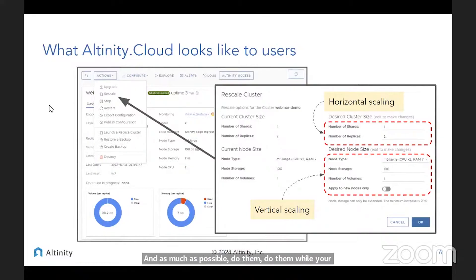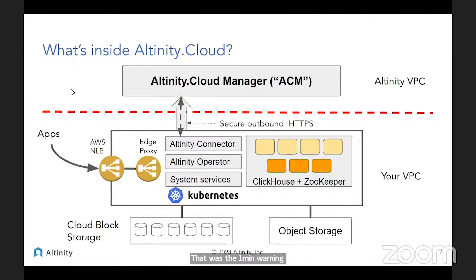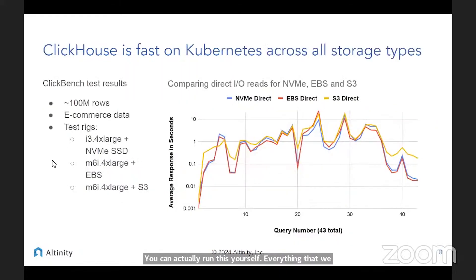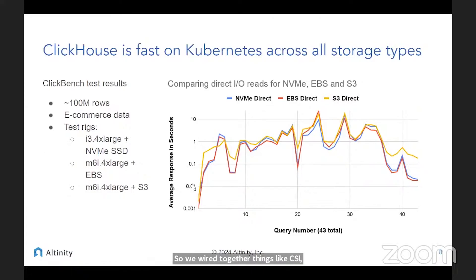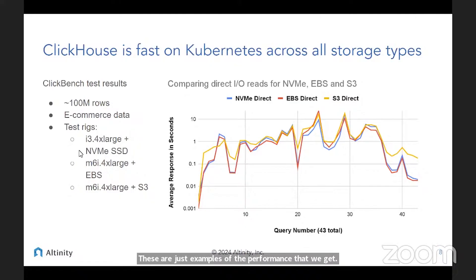A big thing in this type of system is to be fast, but also to be able to make changes with zero downtime. What's inside? A lot of open-source software — you can actually run this yourself. Everything we build into your stack is open-source. What we do is help you make it super fast on Kubernetes, wiring together things like CSI and networking, letting you choose instance types. These are examples of the performance we get, showing sub-second response on Kubernetes. In fact, over years of using Kubernetes, we've never seen any real performance impact from running on that platform — instead, it's mostly just big advantages.